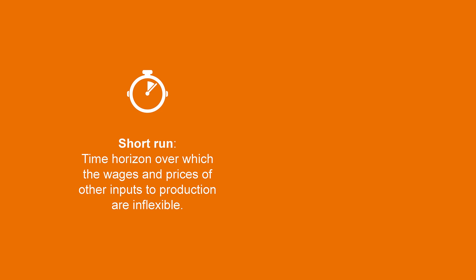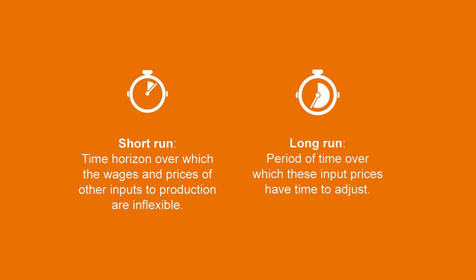Those qualities are significantly different from final products, which can adjust their prices more quickly. So, the short-run consists on the time horizon over which the wages and prices of other inputs to production are inflexible. Within this time frame, it is assumed that there may be imbalances, since some prices may have adjusted to changes in market conditions — those of the final products — while others have not — those of the inputs. The long-run consists on the period of time over which these input prices have had the time to adjust. In this case, the overall price level, contractual wage rates, and expectations are fully adjusted in equilibrium, which allows us to make analysis regarding GDP and general prices.